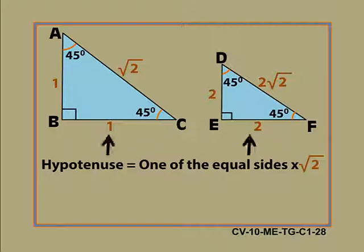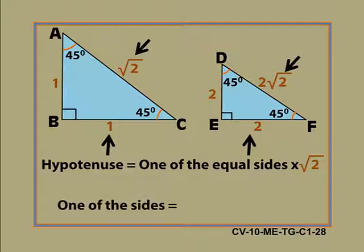Did you get it? Now if we need to find the measure of one of the equal sides it can be obtained by dividing the measure of hypotenuse by root 2. We are able to establish relationships between sides of a triangle here.